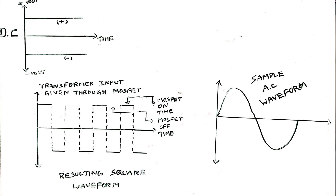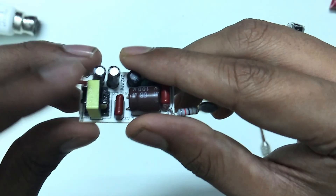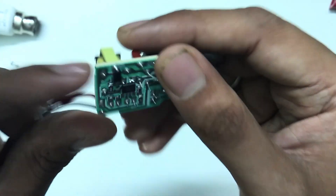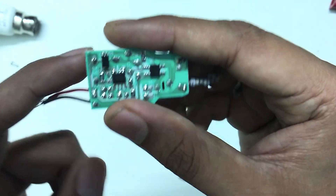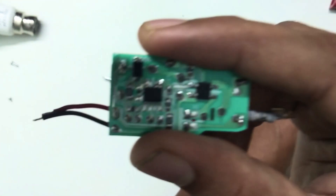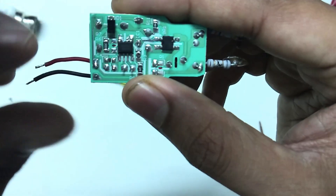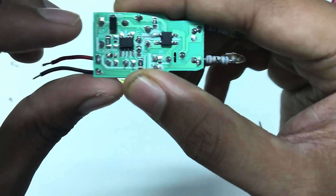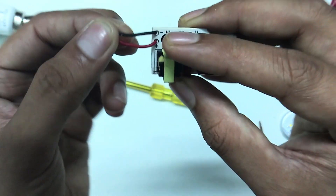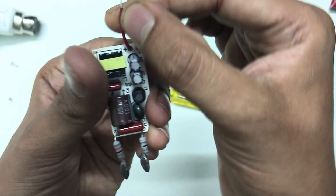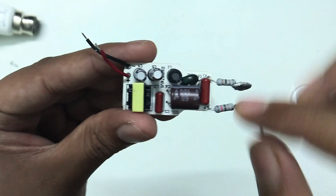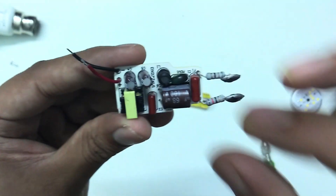The 325V DC goes into a driver IC, which switches in the transformer. This switching produces a square wave, creating a magnetic field. The transformer steps down the voltage. At the output, the LED receives a DC supply — the output terminal gives around 9V. The LED drive uses a capacitor for filtering to keep the supply stable.